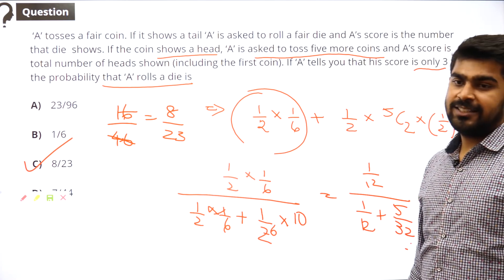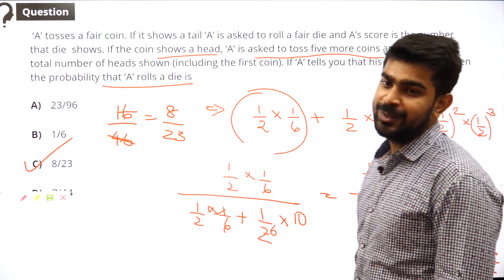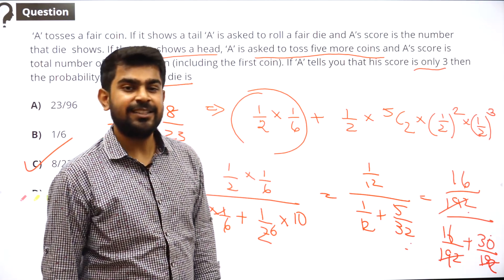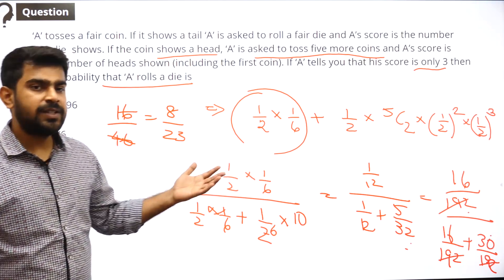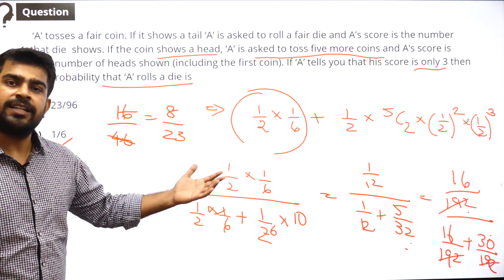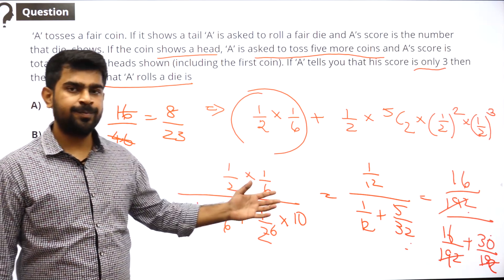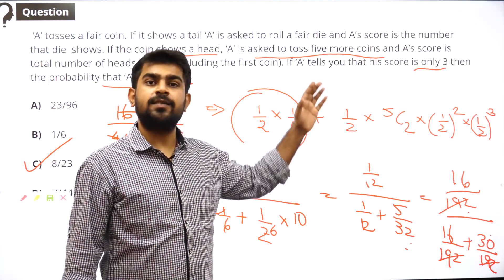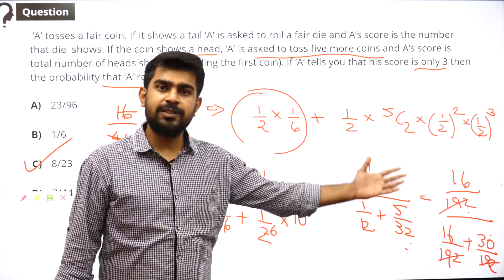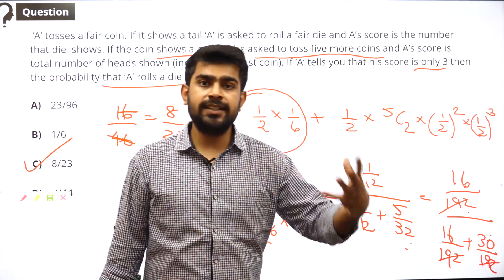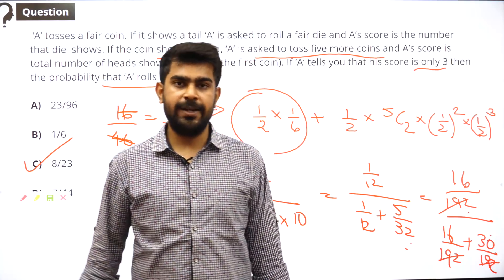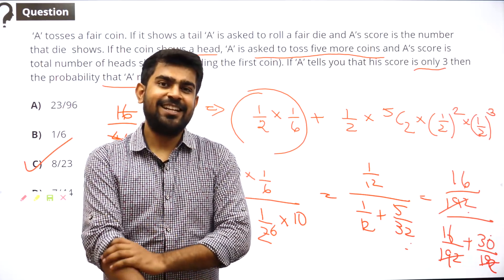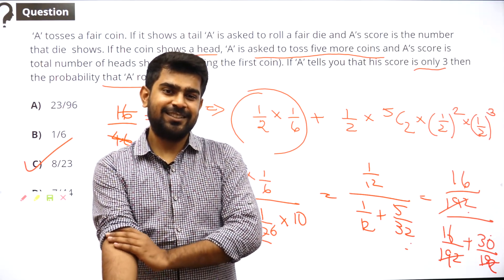This is a pretty interesting question. It looks simple — typical Bayes theorem — but there are lots of good interpretations. You have to understand what total probability is and why it makes solving Bayes theorem questions much easier.